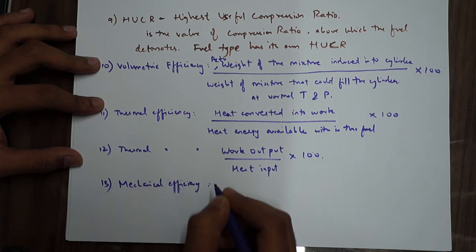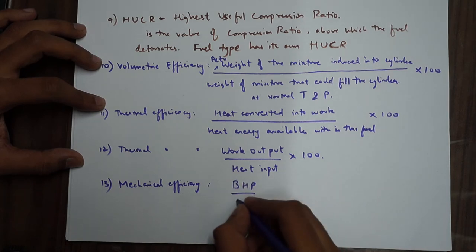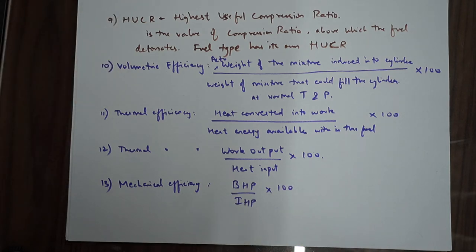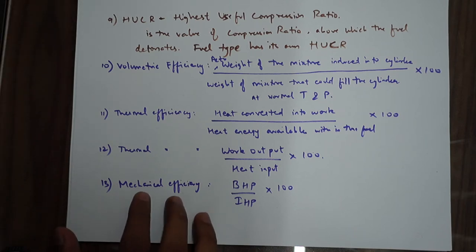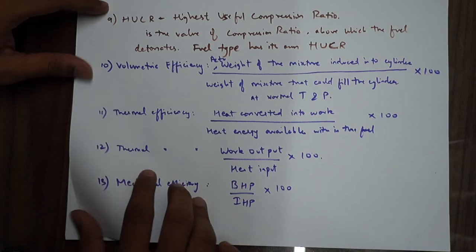Mechanical efficiency is BHP divided by IHP, into 100 - that is brake horsepower by indicated horsepower into 100. I'll explain BHP and IHP in the next video. Let's discuss a few more points about the construction of the piston itself.